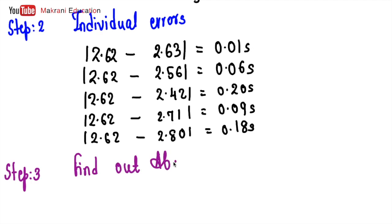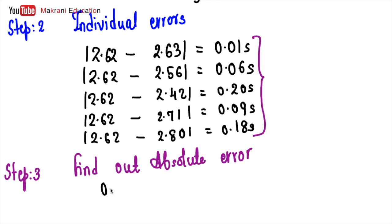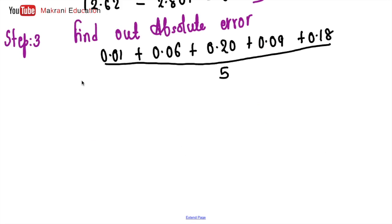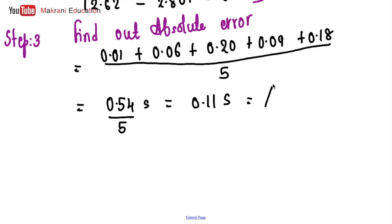Step 3: find absolute error. The absolute error is the mean of all individual errors: (0.01 + 0.06 + 0.20 + 0.09 + 0.18) over 5, which equals 0.54 seconds over 5, giving 0.11 seconds. This is delta_T_mean, your absolute error.